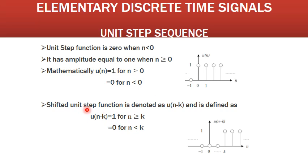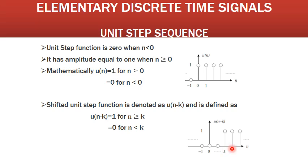The shifted unit step function is denoted as u(n - k), defined as: u(n - k) = 1 for n - k ≥ 0, or equivalently n ≥ k; and u(n - k) = 0 for n - k < 0, meaning n < k. The figure shows the shifted step function. When n ≥ k the amplitude is 1, and for all other values when n < k the amplitude is 0. This is a delayed unit step function.